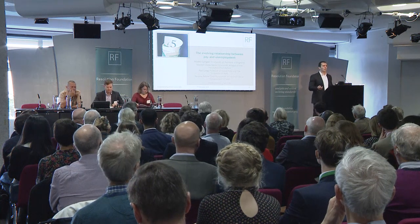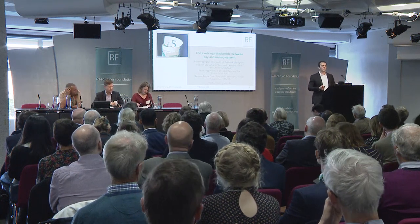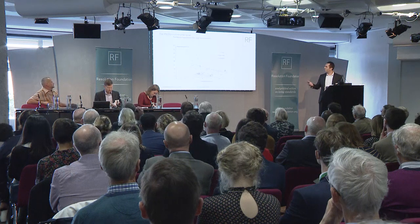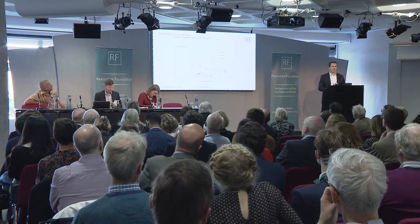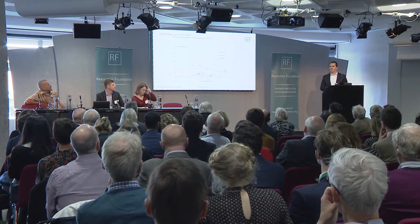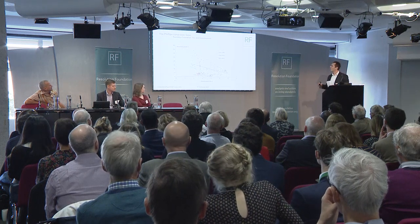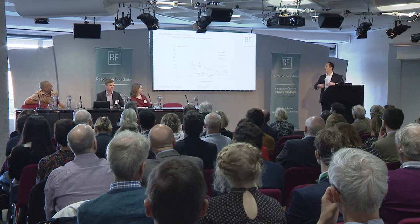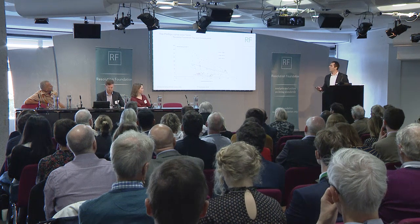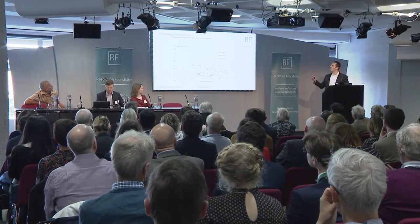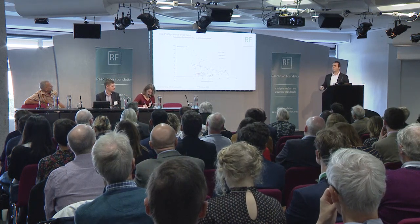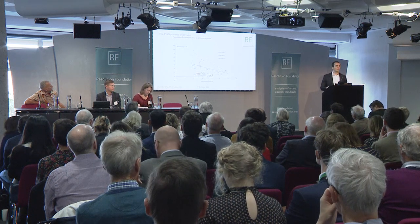I'm going to go into a bit more detail on the relationship between pay and unemployment, delving into some of the stuff that Torsten has already touched on. Starting with the basic data to put it into historical context — when people refer to instability in the Phillips curve, this is probably the picture you have in mind. Over time, wage inflation and unemployment fluctuations have changed, and both pay growth and unemployment have fluctuated at lower levels with reduced volatility.